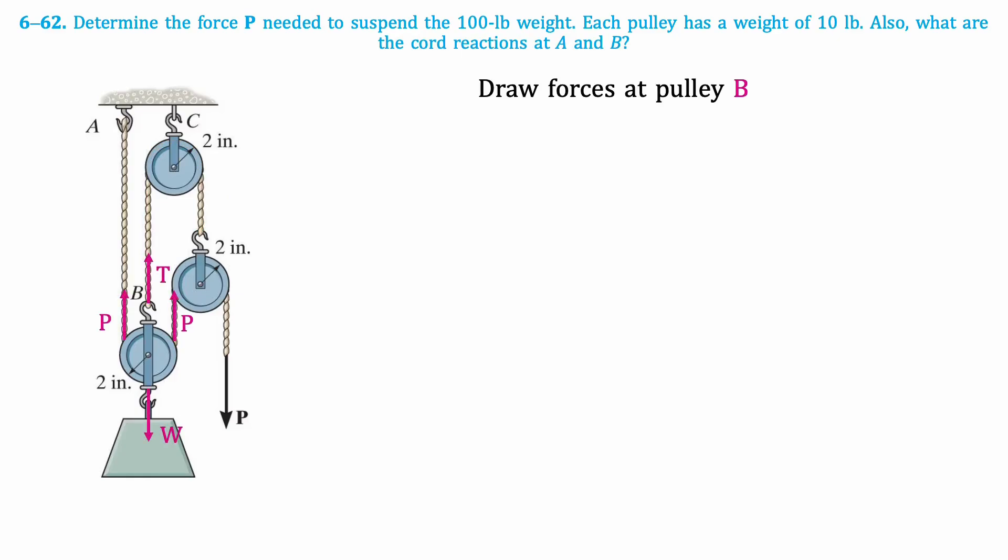These are shown in pink. The force W is the weight of the pulley and the chord, which are given as 100 pounds and 10 pounds. Now we can write an equation for the sum of vertical forces. This results in 0 equals 2P plus T minus 110.